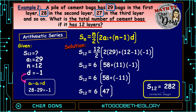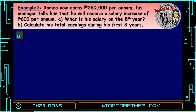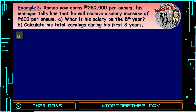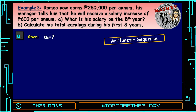Therefore, the total number of cement bags is 282. Example number 3: Romeo now earns 260,000 pesos per annum. His manager tells him that he will receive a salary increase of 600 pesos per annum. For letter A, what is his salary on the eighth year? For letter B, calculate his total earnings during his first eight years. For letter A, we're going to use the arithmetic sequence formula. Given: we're looking for A sub 8; A sub 1 is equal to 260,000; n is 8; and d is equal to 600.